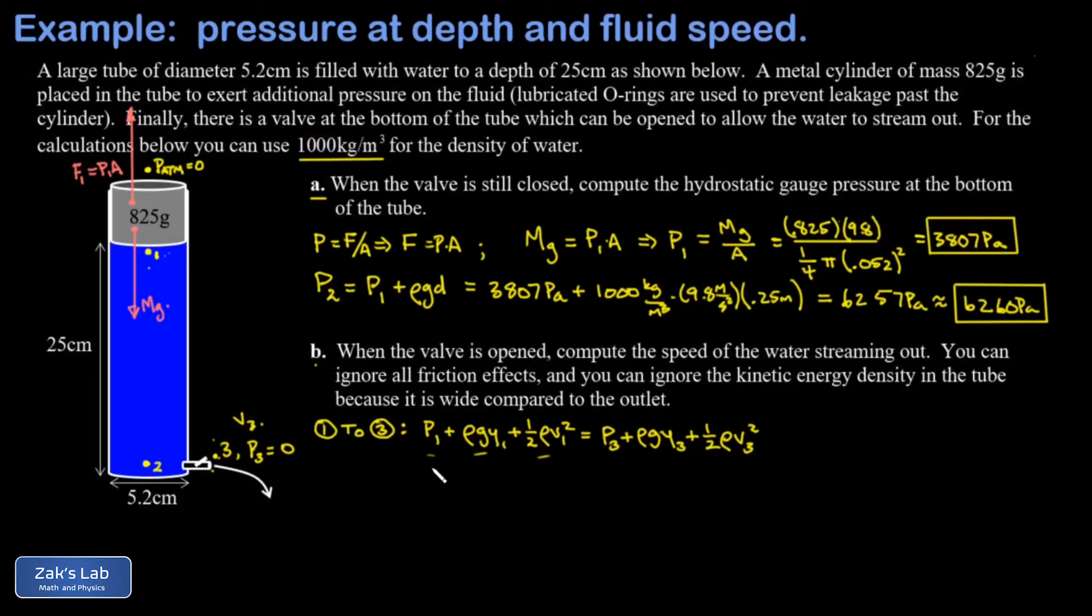There's three types of energy density: pressure, gravitational potential energy density, and kinetic energy density. At point one we've already calculated the pressure. We'll get gravitational potential energy density with the y-coordinate. I'm using the simplest coordinate system, putting y equals zero at the bottom of the tube and y equals 0.25 meters at the top.